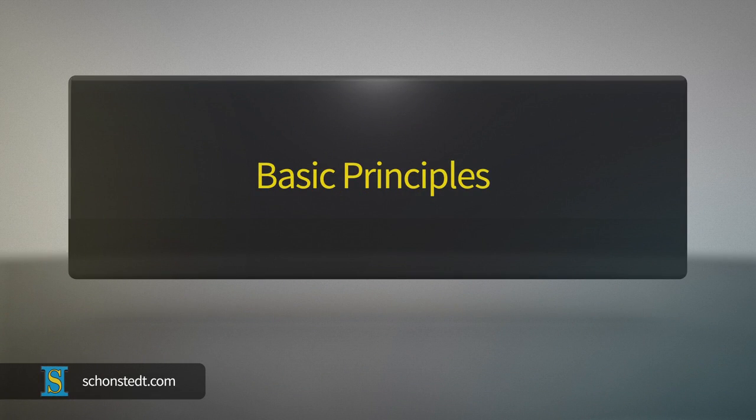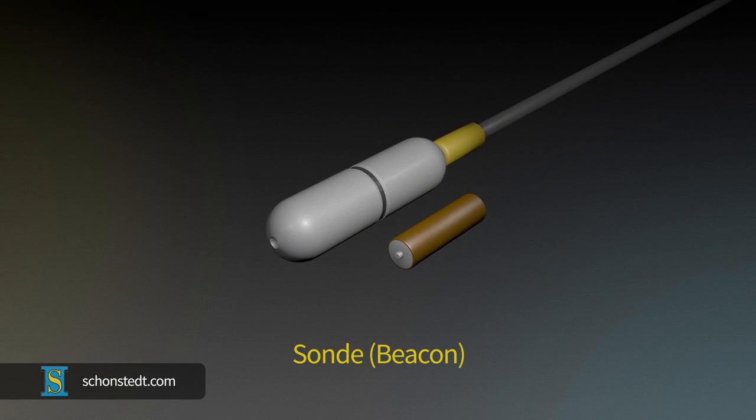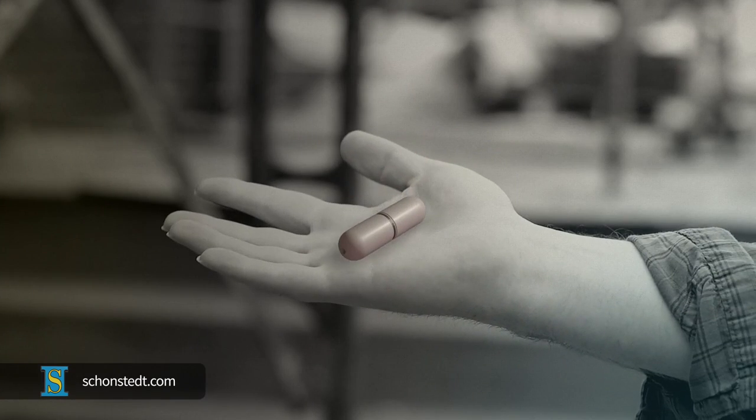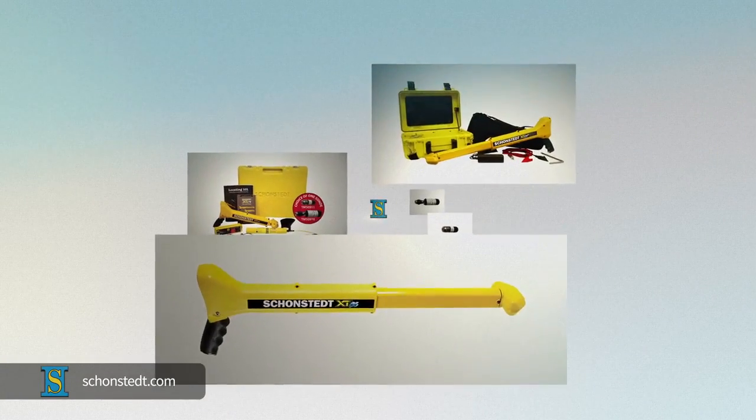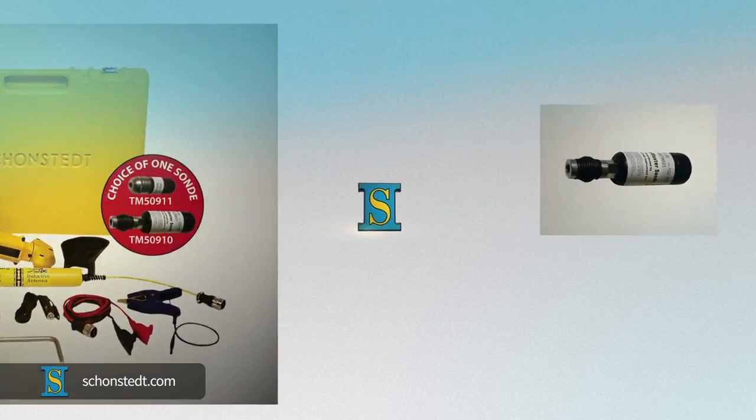The Principles of Sonde Locating. A sonde, sometimes referred to as a beacon, is a small battery-operated transmitter that typically fits in the palm of your hand and can be inserted inside PVC pipes and traced or detected with Shonset's pipe and cable locator receivers or with dedicated sonde locators.